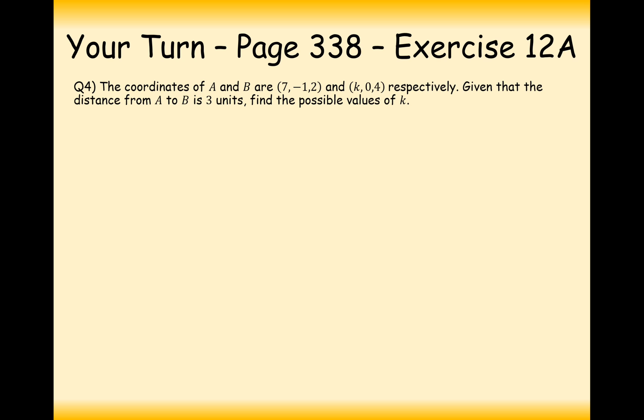Your turn to have a go at this question here. Very similar to the last question we've just done. Pause the video and try this one out. Let's have a look at how we get from A to B. The way we get from A to B is by doing position B take away position A. So it's K, 0, 4 take away 7, minus 1, 2. In this case we're going to get K minus 7, 1, and 2. Now we have to find the modulus from A to B. We know this is equal to 3, but it's also equal to the three-dimensional Pythagoras distance. So plus 1 plus 4. This equals the square root of K squared minus 14K plus 49 plus 5 equals 3.